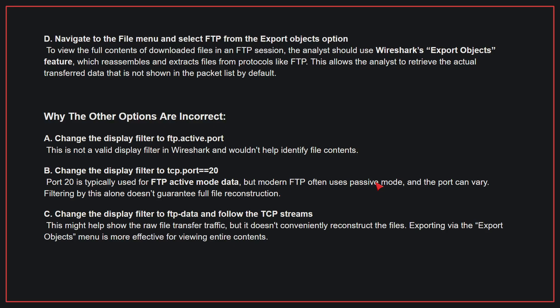Why the other options are incorrect? A. Change the display filter to FTP active port. This is not a valid display filter in Wireshark and wouldn't help identify file contents. B. Change the display filter to TCP port 20. Port 20 is typically used for FTP active mode data, but modern FTP often uses passive mode and the port can vary. Filtering by this alone doesn't guarantee full file reconstruction. C. Change the display filter to FTP data and follow the TCP streams. This might help show the raw file transfer traffic, but it doesn't conveniently reconstruct the files. Exporting via the Export Objects menu is more effective for viewing entire contents. Therefore, the correct answer is D.